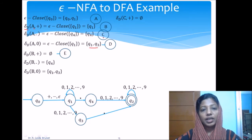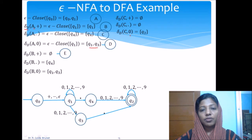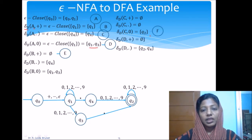From state C on plus or minus: C is {Q4}, and Q4 has no transition on a sign, so it is the null set, which is state E. From C on dot: Q4 has no transition on dot, so it is also null set (state E). From C on any digit 0–9: from Q4 on a digit we go to Q2, and the epsilon closure of Q2 is Q2. This is a new subset, labeled state F.